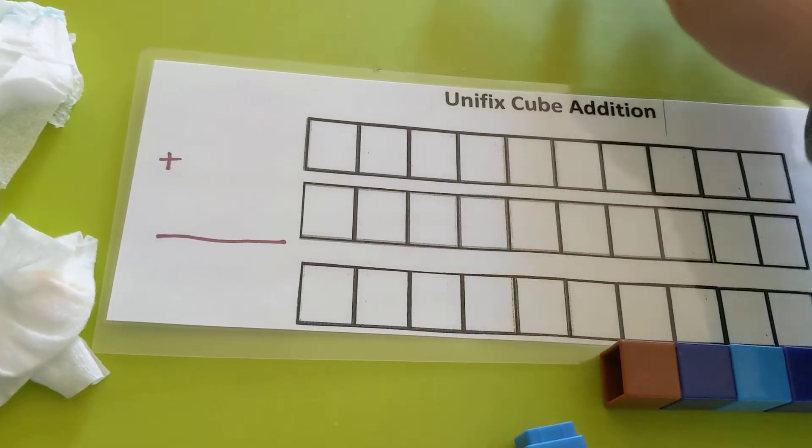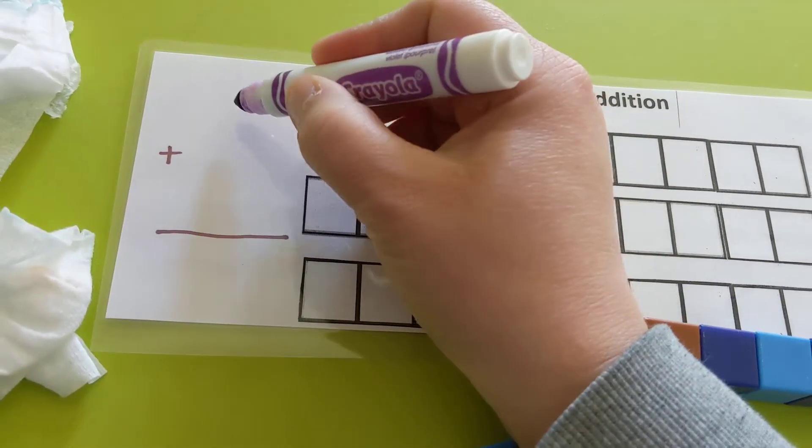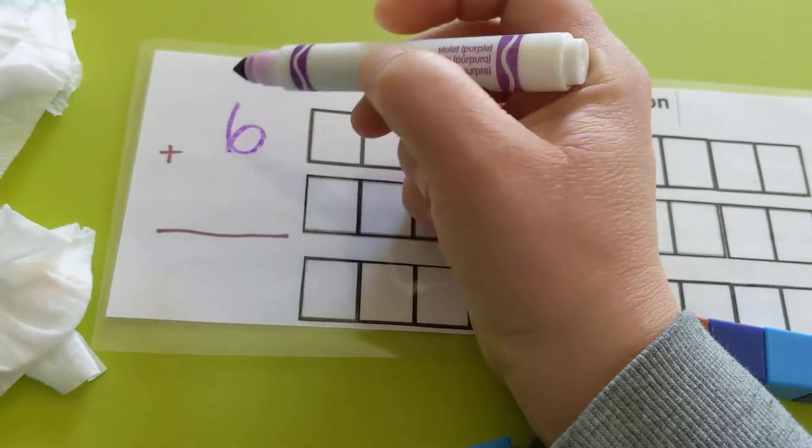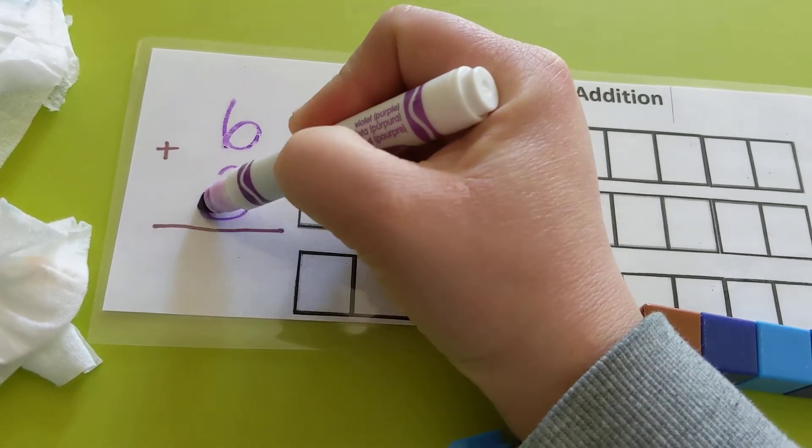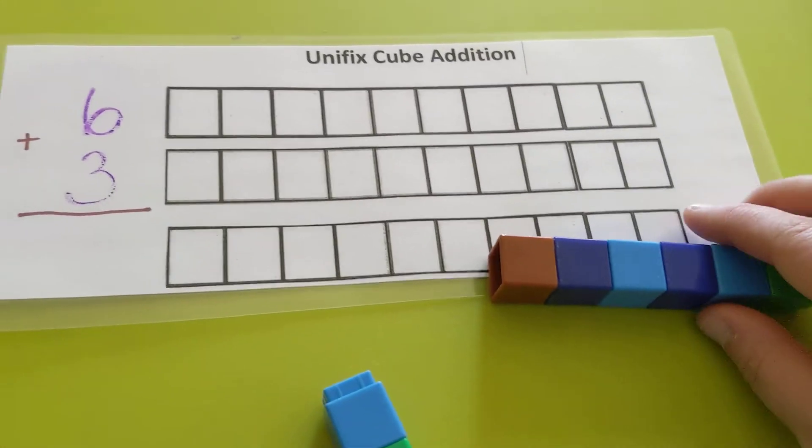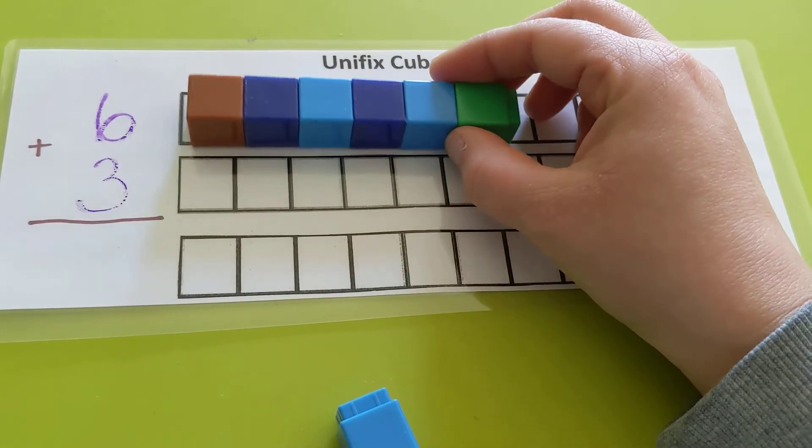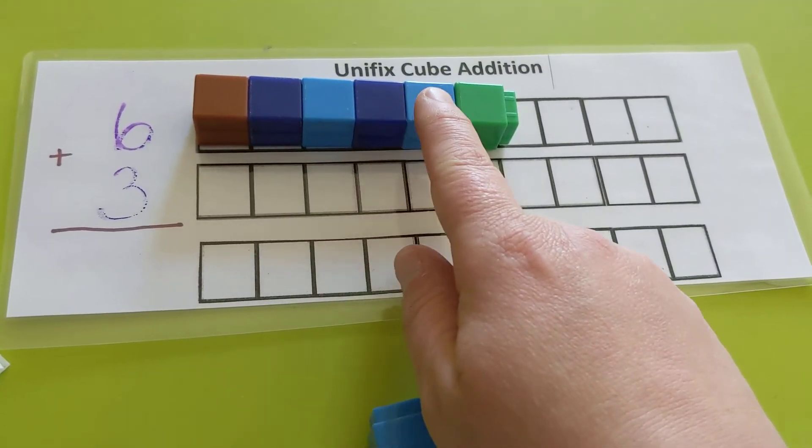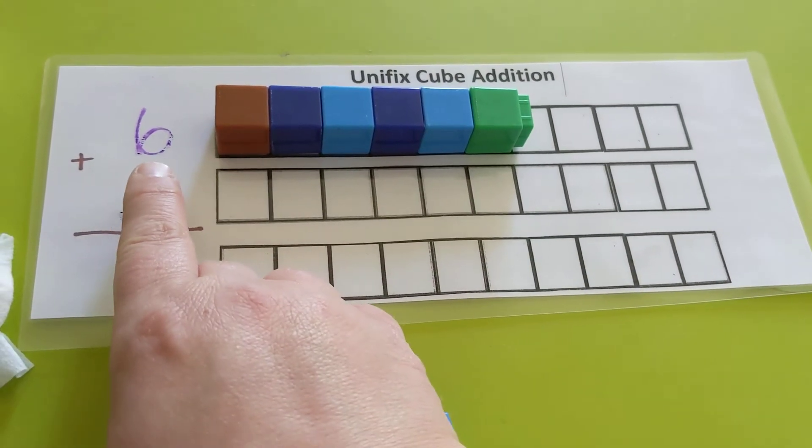So, if we do, let's do that same number. 6 plus 3. And we're going to write our answer down here. So 6 plus 3. We're going to get our Unifix Cubes. And I have one hand because I'm filming so I already counted this out. 1, 2, 3, 4, 5, 6. That's 6.